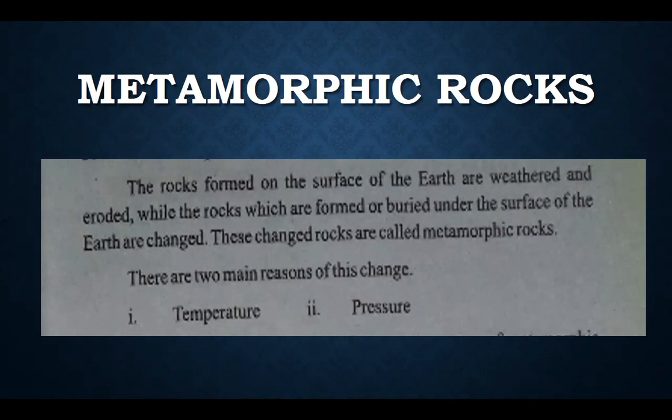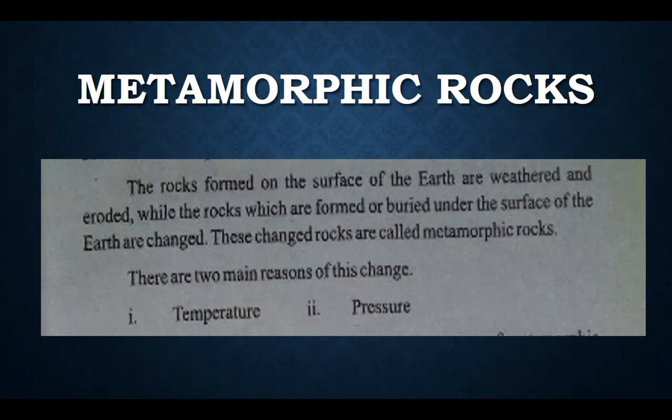The rocks formed on the surface of the earth are weathered and eroded, while the rocks which are formed or buried under the surface of the earth are changed. These changed rocks are called metamorphic rocks. There are two things here: firstly, rocks on the earth's surface undergo two processes — they are weathered, meaning breakage of rocks due to weather conditions, and eroded, meaning breakage of rocks due to external forces.